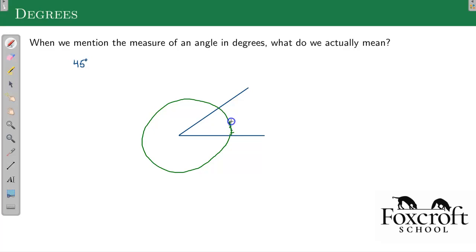So we break up this circle into 360 equal pieces. And then we basically count how many of those pieces we hit. So if we broke this up into 360 equal pieces and we counted, we figured out whether we hit 45 of those pieces to make this angle.